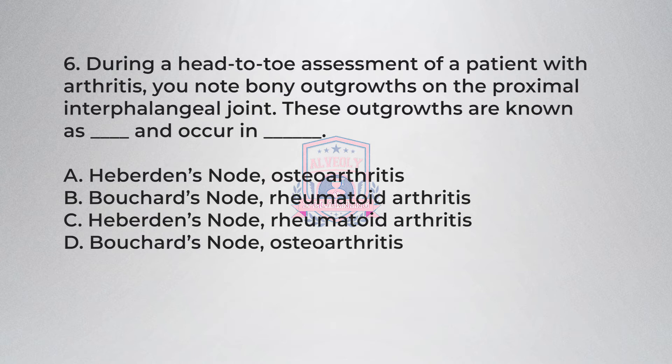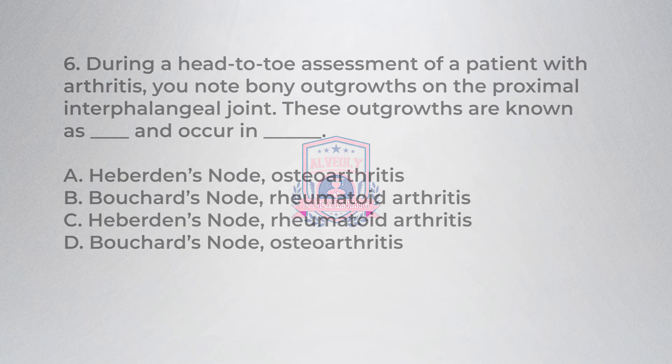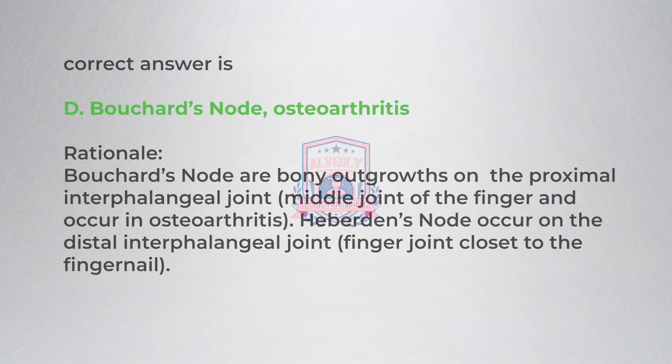A) Heberden's node, osteoarthritis. B) Bouchard's node, rheumatoid arthritis. C) Heberden's node, rheumatoid arthritis. D) Bouchard's node, osteoarthritis. Correct answer is D: Bouchard's node, osteoarthritis.